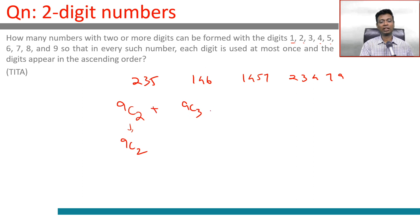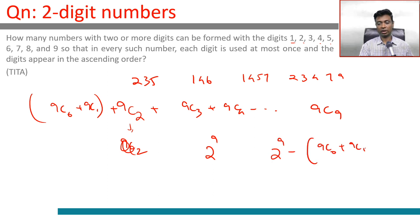So our answer is very simple: 9C2 plus 9C3 plus 9C4 all the way till 9C9. If you add 9C0 and 9C1 also to this, the overall thing is 2 power 9. So what we are looking for is 2 power 9 minus 9C0 minus 9C1, which is 2 power 9 minus 1 plus 9.